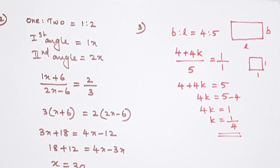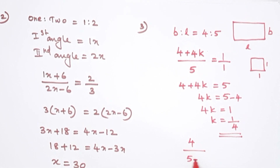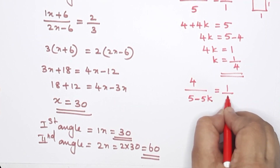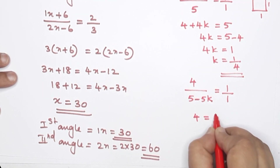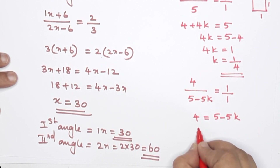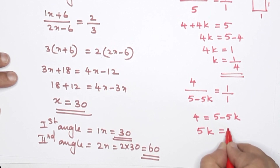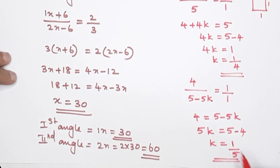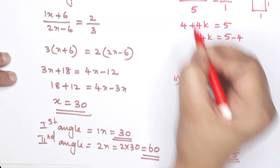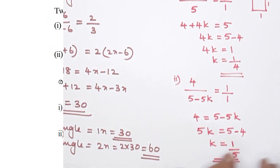By what fraction should the longer side be decreased so the rectangle becomes a square? The longer side is 5, and we subtract 5k from it. For the shape to be square, the ratio becomes 1. So 4 is equal to 5 minus 5k. Then 5k equals 5 minus 4, giving k equals 1 by 5. So the fraction to be decreased from the longer side is 1 by 5. Next question.